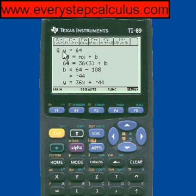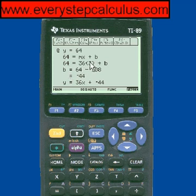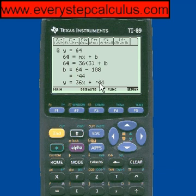Press enter again — it shows you the formula, you write this stuff on your paper as you go. At y equals 64, which was our choice: 64 equals mx plus b, so 64 equals 36 times 3 plus b. So b equals 64 minus 108, which is negative 44. Here's the formula: y equals 36x minus 44 for that point. Pretty neat. HeavyStepCalculus.com, check it out.